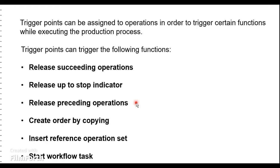We have the release preceding operations, where you can release all preceding operations before the operation to which the trigger point has been assigned. Then we have create order by copying, where you can create a new production order without the reference of a material by just copying a reference operation set. Then we have insert the reference operation set, where you can insert a reference operation set into an existing production order — to enable this, you must enter the operation between which you would like to insert it.